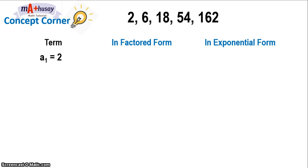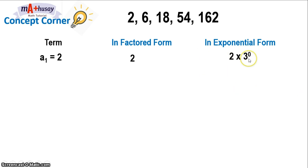We take the first term, which is 2. We can rewrite it in factored form as 2, and in exponential form as 2 times 3 raised to 0. Take note that we have the first term times the common ratio raised to 0. Note that 3 raised to 0 is 1, that's why it's still the same as the first term. So 2 times 1 is 2.